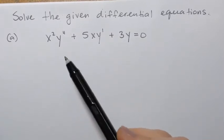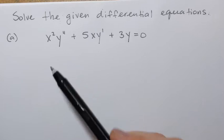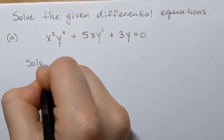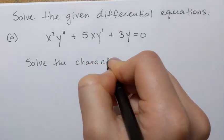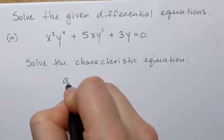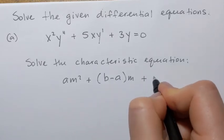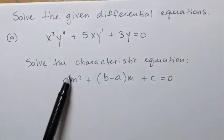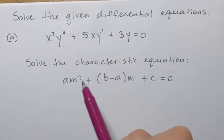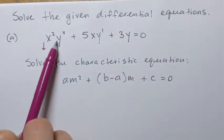To obtain a general solution to the second order Cauchy-Euler differential equation, we need to start by solving a characteristic equation, also called the auxiliary equation. Its form is: am squared plus (b minus a)m plus c equals 0. It's a quadratic equation. The constants a, b, and c come from the original differential equation — specifically the coefficients of each term. A is the constant from the coefficient of the second order term.